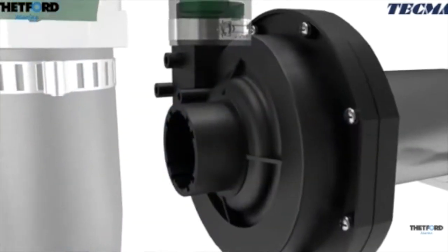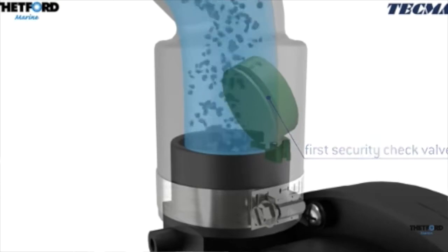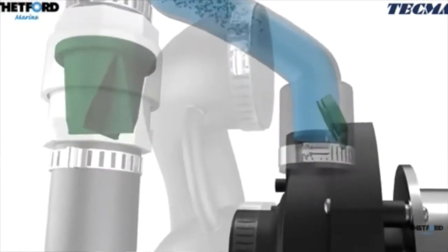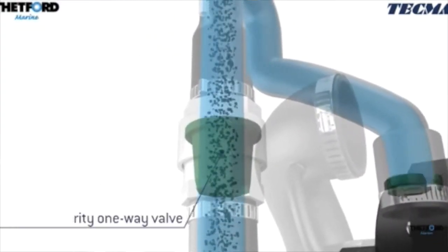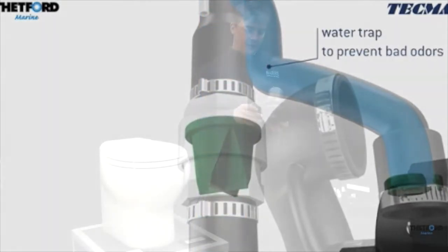Like all Thetford electric toilets, it's got the double flapper technology so there's a flapper here at the exit of the macerator going into the discharge plumbing and then there is another one at the end of the discharge hose before it goes into your boat plumbing and onto the tank.